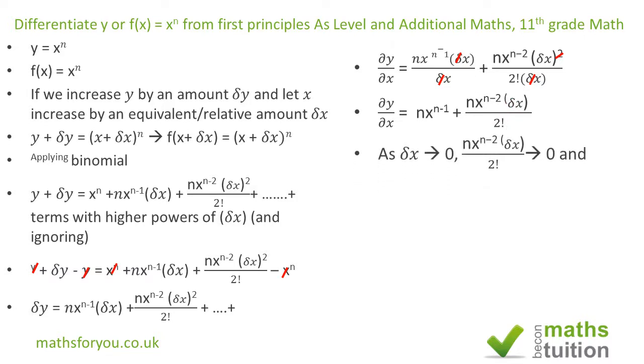Now as δx tends to zero, this term will disappear because that's nearly zero, which means that dy/dx = nx^(n-1). I hope all that made sense. Please subscribe and thank you for watching. Bye bye now.